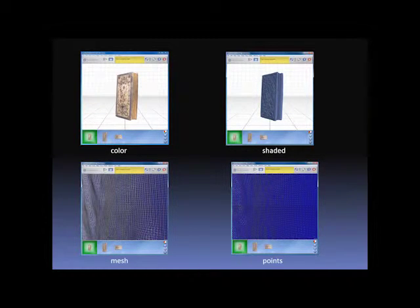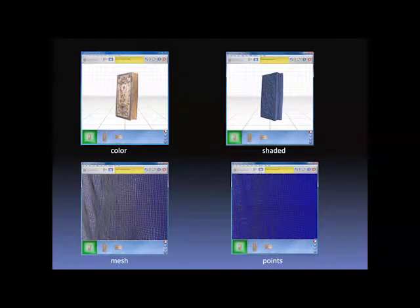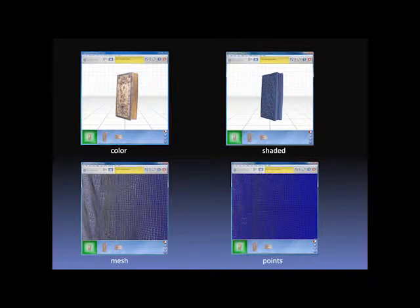The full color view shows the object with its color rendering. The shaded view shows the shaded geometry and provides a better view of surface topography without color. The mesh view shows how the object is formed through polygons, and the points view exhibits the data of the object at a dot level.